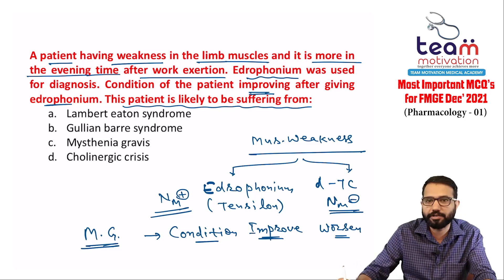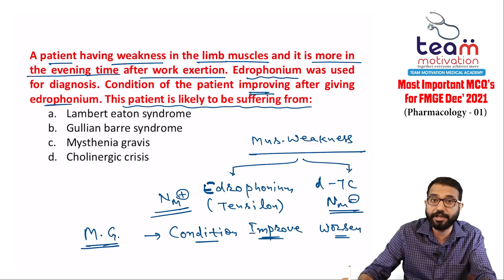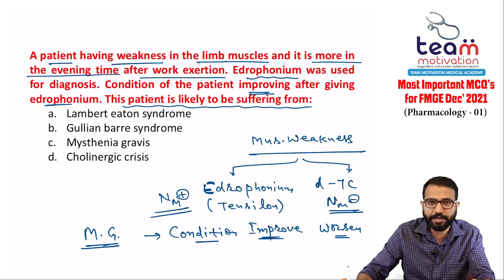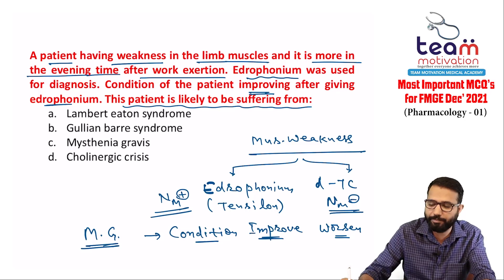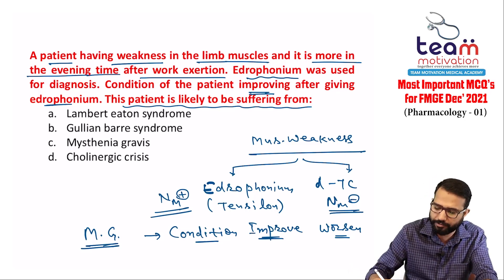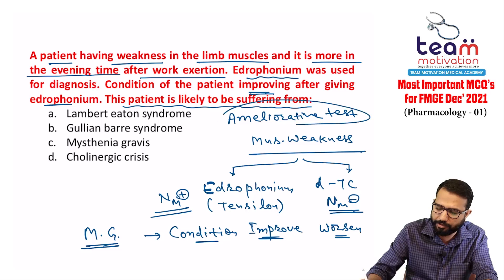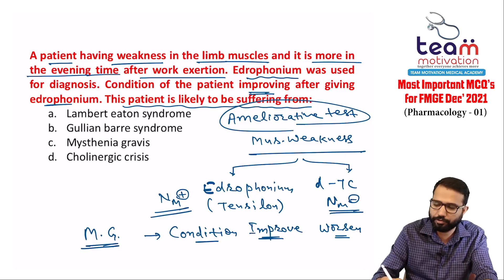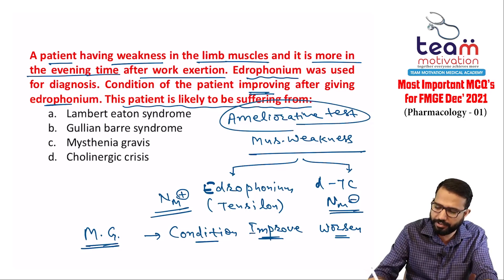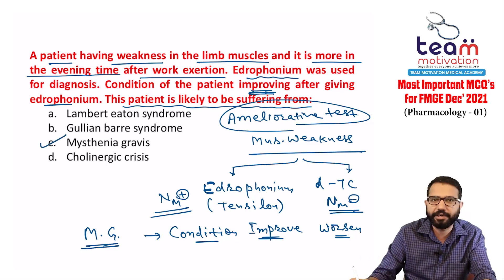If NM receptor functioning is decreased and you give edrophonium, the NM receptors are stimulated and the condition improves. If you give tubocurarine (a neuromuscular blocker), the condition will worsen. If the condition improves after edrophonium, it is called an ameliorative test — positive for myasthenia gravis.